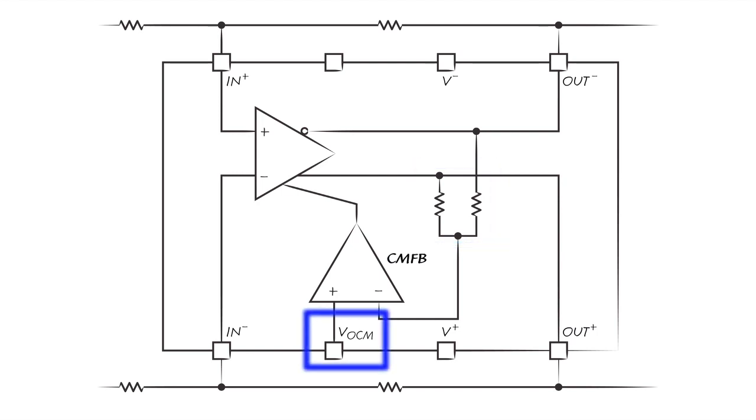The other terminal is driven by the external VOCM pin. The output of this extra op-amp connects into the main op-amp in such a way that it pulls both outputs up or down in the same direction. This loop forms negative feedback, causing the common mode of the two outputs to be identical to whatever voltage you set on the VOCM pin.